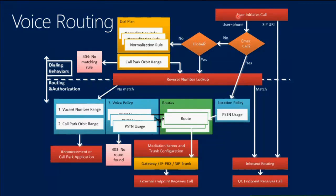This voice routing diagram shows everything from a user entering a phone number to the call going wherever it should go. We use this slide in the Microsoft Certified Solution Master training. Starting in the upper right corner: a user wants to initiate a call. If Corneal is in my contact list, I just double-click him and say 'call this user.' In this case there are no phone numbers involved — I know his SIP URI so I can go directly.